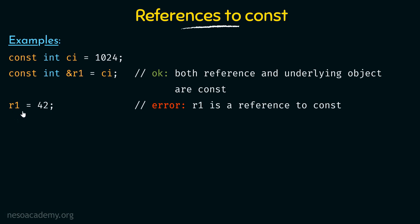Here I am saying r1 = 42, trying to put the value 42 into r1. This is going to throw an error because r1 is a reference to const — we cannot use references to const to change the value of the underlying object. If r1 were a normal reference, then r1 = 42 would change the value of ci as well, because r1 is bound to ci. But since r1 is a reference to a const, this is not allowed.